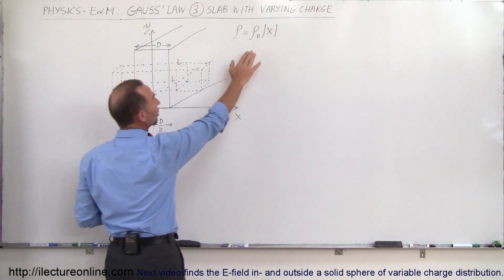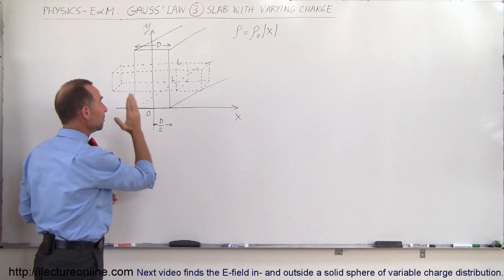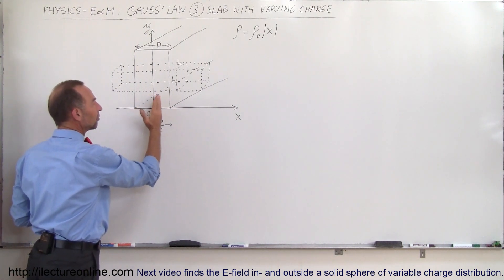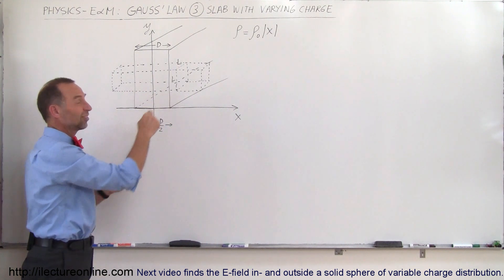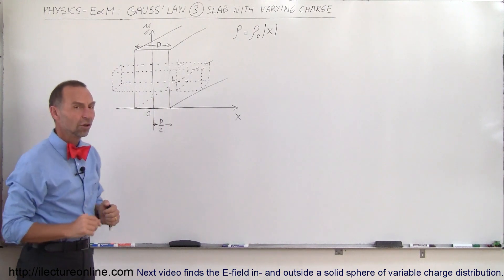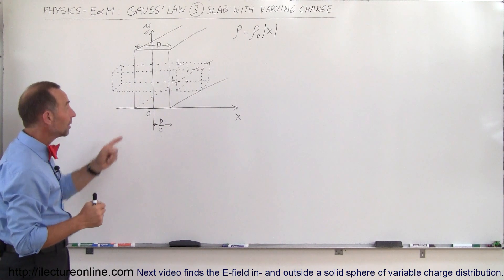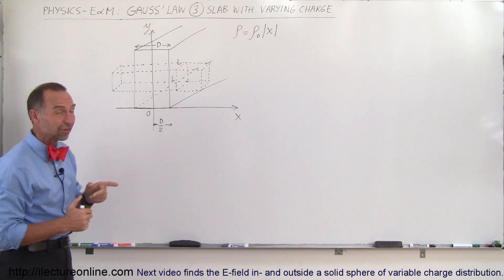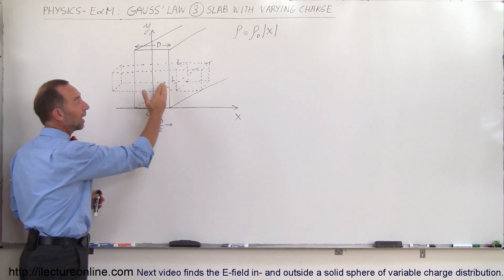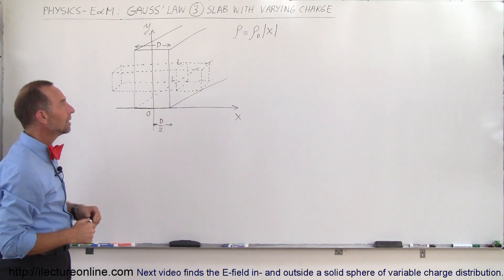Now the charge distribution is not constant — it varies with position, with distance away from the center. According to the equation, when x is zero, the charge density is zero. That means at the middle of the slab the charge density is zero, then it increases linearly as it reaches the edge in both directions. That's why we use the absolute value sign, indicating positive charge in both directions. So what is the electric field inside and outside the slab?